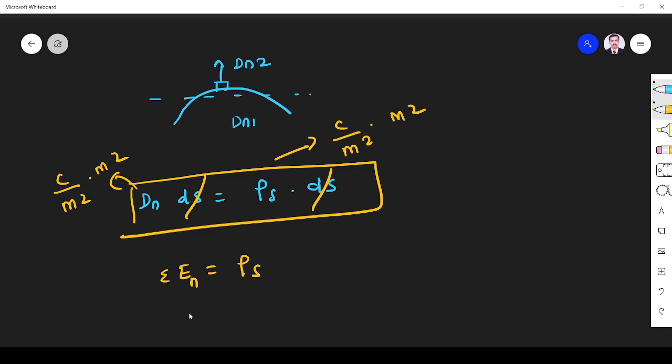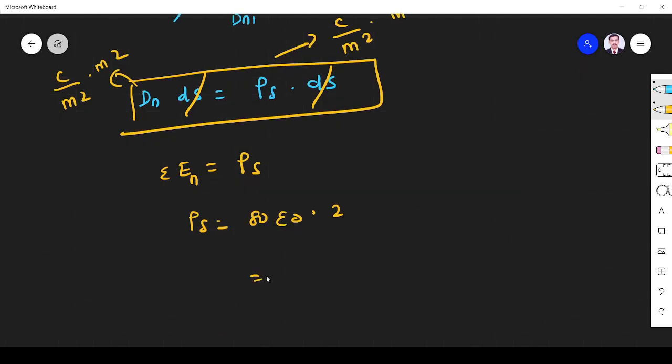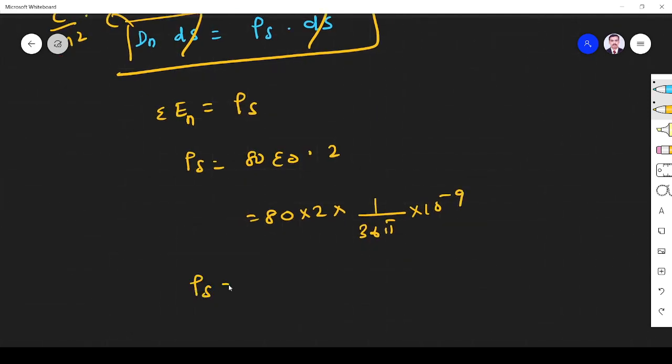What they ask is rho s surface density. Epsilon is equal to 80 epsilon naught. And the electric field is 2 volts per meter. If you simplify 80 into 2 epsilon naught is given by 1 by 36 pi into 10 power minus 9.